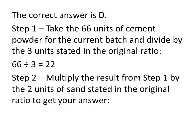For step 2, multiply the result from step 1 by the 2 units of sand. Again, that was from the original ratio, 2 units of sand for every 3 units of cement powder. So, taking those 2 units of sand and then multiplying, we get 44 units of sand for our answer.